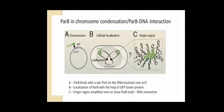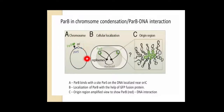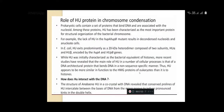Then there is ParB in chromosome condensation. In the ParB-DNA interaction, ParB binds with a site called parS on the DNA, localized near oriC. OriC is the origin of replication site. The cellular localization of ParB is studied with the help of GFP fusion protein. The origin region is amplified to show ParB-DNA interaction. Then we study the role of HU protein in chromosome condensation.